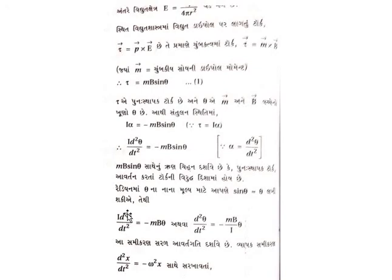I · d²θ/dt² equals minus mB · theta. And by analogy, d²θ/dt² equals minus (mB/I) · theta. Comparing with the SHM equation: d²x/dt² equals minus ω² · x. So ω² equals mB/I.